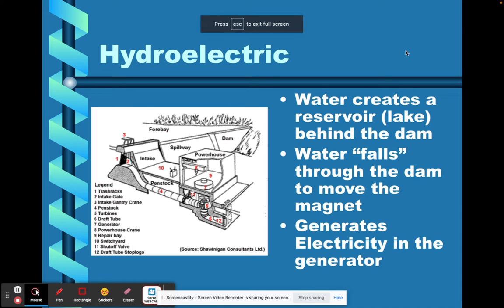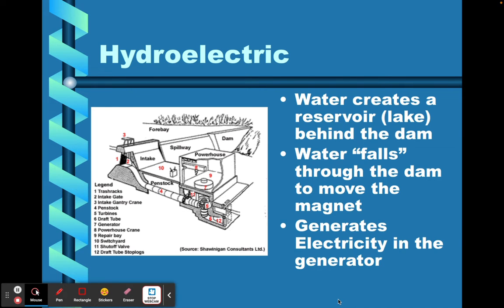We're going to talk about hydroelectric or water power. Hydroelectric power is built in rivers — a wall called a dam is put across a river. The dam creates a reservoir, which is a lake behind it. The water falls from a higher level to a lower level, and as that moving water flows down, it moves a magnet and a coil of wires to generate electricity.